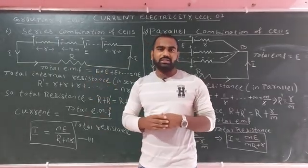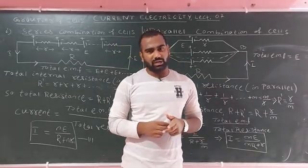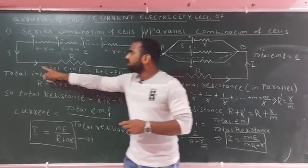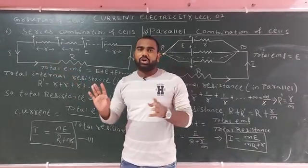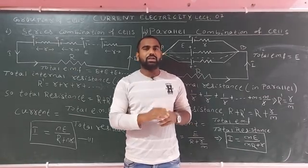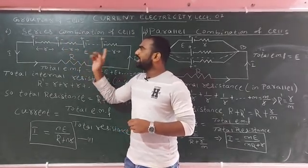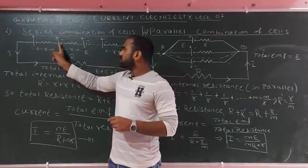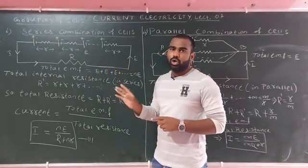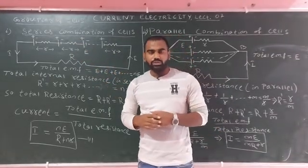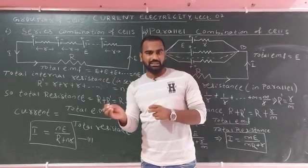If we have a single cell with EMF E and internal resistance R, in series combination the same current flows through all cells, but the potential difference adds up. According to the superposition principle, the total potential is the sum of individual potentials. So the total EMF equals E plus E plus E, up to n cells, which means total EMF equals nE. For example, if each cell has EMF 5V and we have 3 cells, total EMF is 5 + 5 + 5 = 15V, that is 3E.